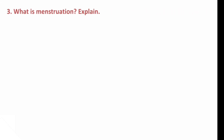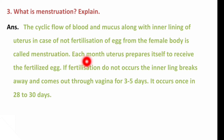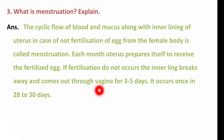Next question: What is menstruation? The cyclic flow of blood and mucus along with the inner lining of the uterus, in case of non-fertilization of the egg from the female body, is called menstruation. Each month the uterus prepares itself to receive the fertilized egg. If fertilization does not occur, the inner lining breaks away and comes out through the vagina for 3–5 days. It occurs once in 28–30 days.